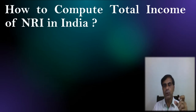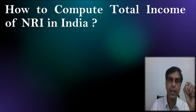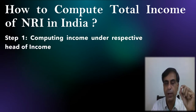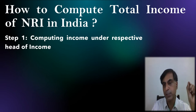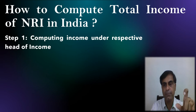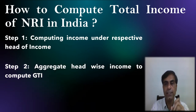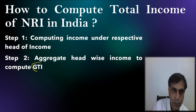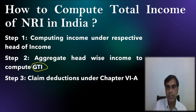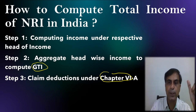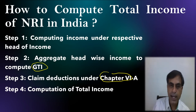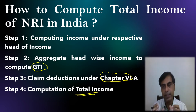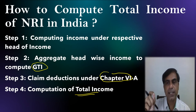Now let me put before you the steps for computing the total income of NRI in India. Step one is computing income under respective heads of income — salary income, house property income, business income, capital gain income, and other source income. Then aggregation of these gives a figure called GTI (Gross Total Income). From GTI, you are entitled to avail certain deductions as per Chapter 6 of the Income Tax Act, like Section 80C, etc. The balance amount after reducing Chapter 6 deductions from GTI is treated as the total income of an NRI which is taxable in India.